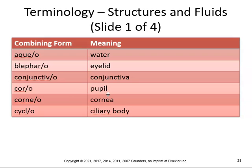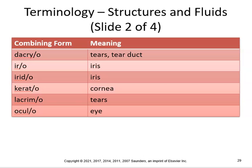A corneal ulcer is a defect in the surface of the cornea. Cycl means ciliary body, so cycloplegic pertains to paralysis of the ciliary muscle, meaning you can't accommodate to certain things. Dacr means tears or tear duct, so dacryoadenitis is inflammation of the lacrimal tear gland. Iritis is inflammation of the iris. Iridic is pertaining to the iris. Iridectomy would be removal of the iris. Kerat means cornea, so keratitis is inflammation of the cornea.